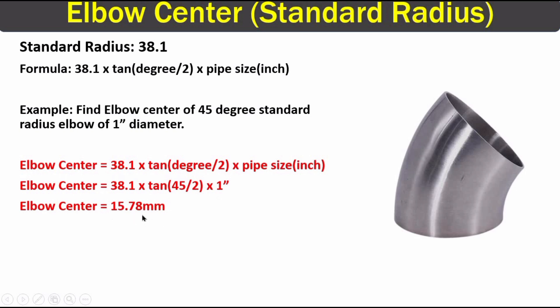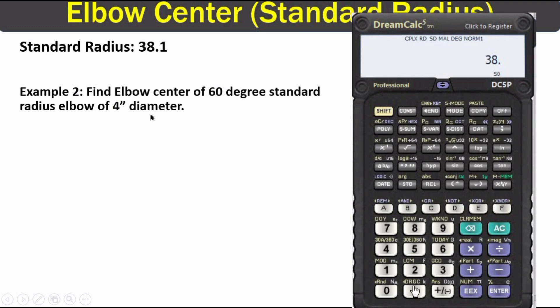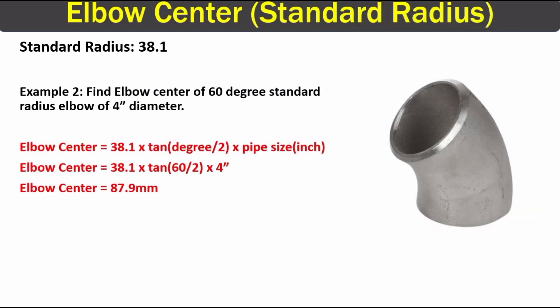Now let's solve another case. Here we have a 60 degree standard radius elbow and the diameter is 4 inches. Applying the same formula on the calculator: 38.1 multiplied by 10, into 60 divided by 2, multiplied by 4 inches. We get 87.9 millimeters as the elbow center of this specific elbow.